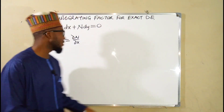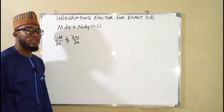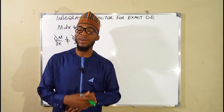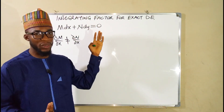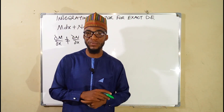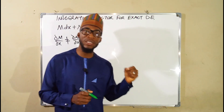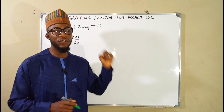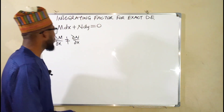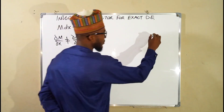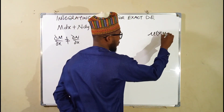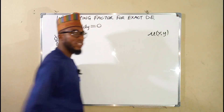So the question is, what if they are not the same? If they are not the same, you have to find other methods to solve your equation, or you have to convert it into an exact differential equation by multiplying through by an integrating factor. So how can we find that integrating factor? Let mu of x and y be our integrating factor.